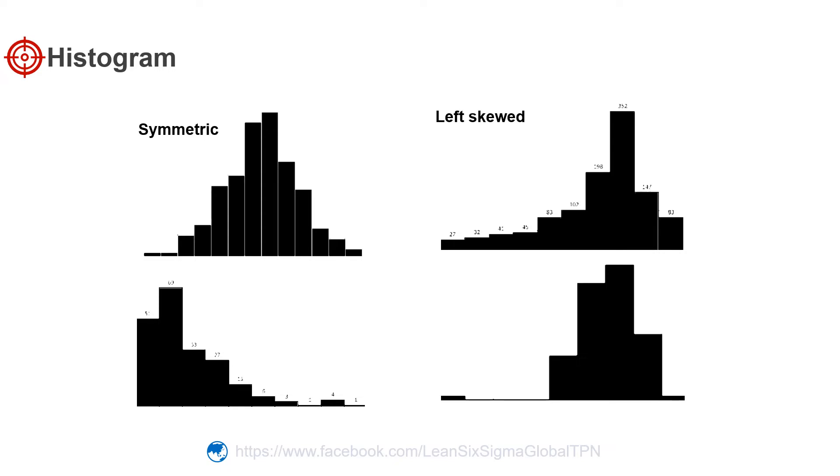If the data are not symmetric, they may be skewed to the left or skewed to the right. Sometimes there are data points that do not fall near any other data points in the data set. These extremely high or low values are called outliers.